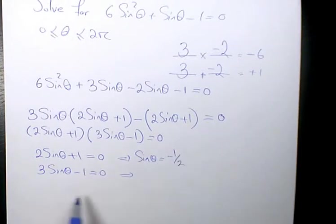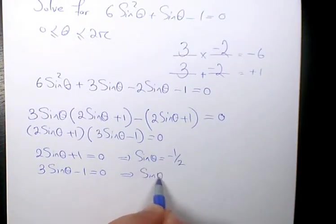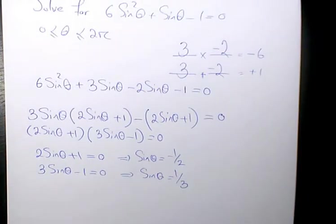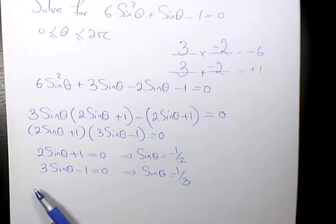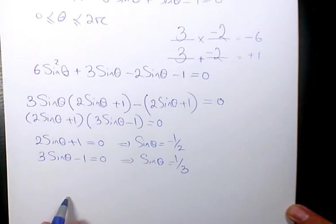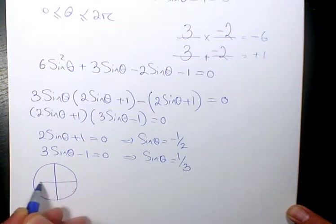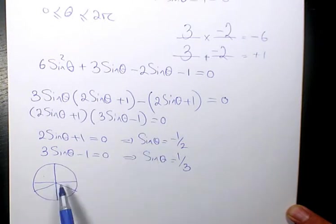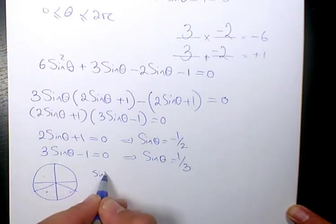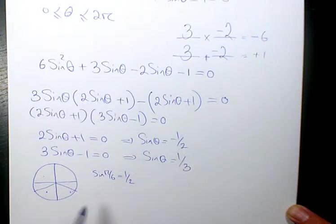If you solve for each of them, here we have sine theta equals negative 1 over 2, and here we have sine theta equals 1 over 3. Now sine theta equals negative half. Sine theta is negative when we are looking for quadrants 3 and 4, based on the CAST rule.